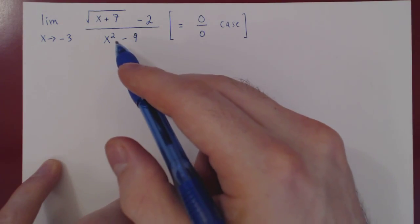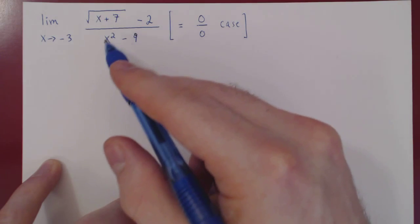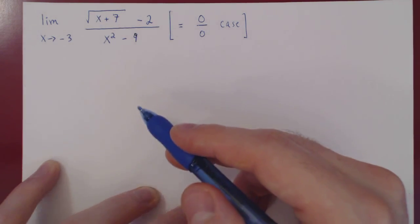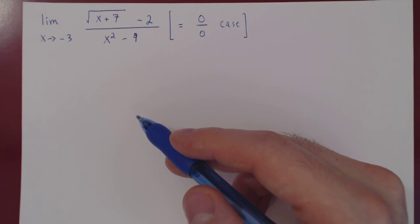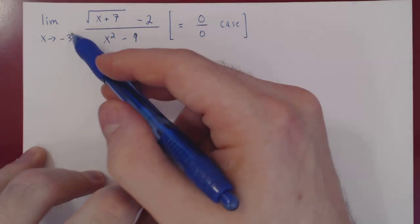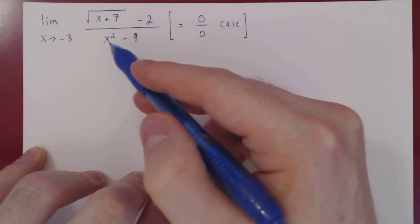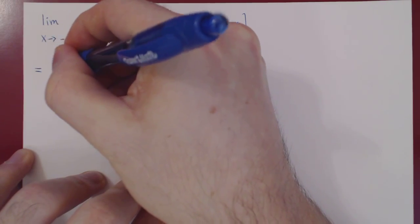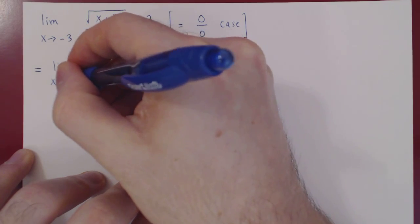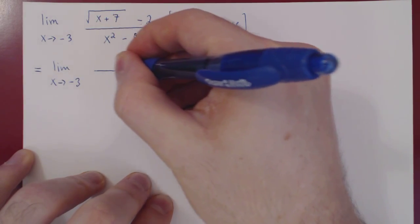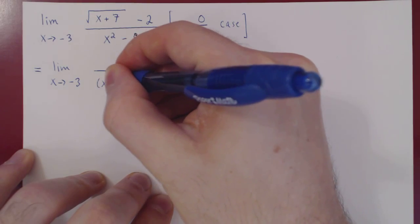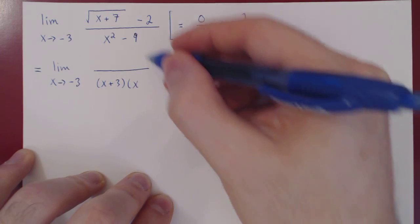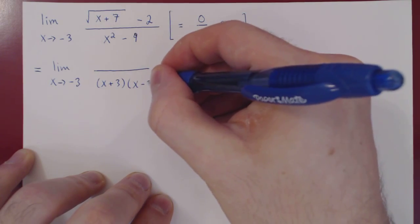One thing is clear: we should factor this quadratic polynomial as it is 0 when x is negative 3. From the factor theorem, x minus negative 3, therefore x plus 3, is a free factor. And y times 3 is negative 9, clearly negative 3.